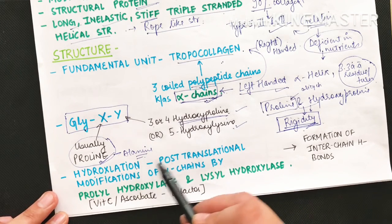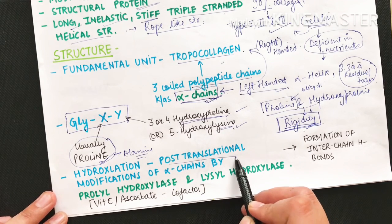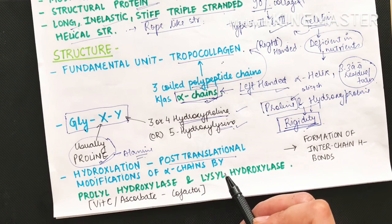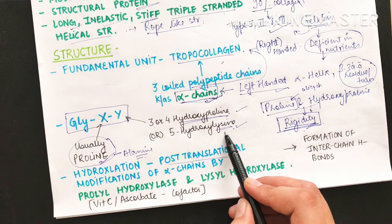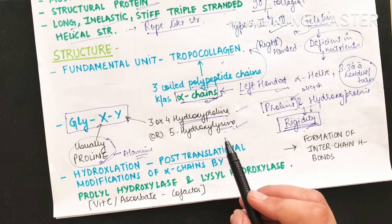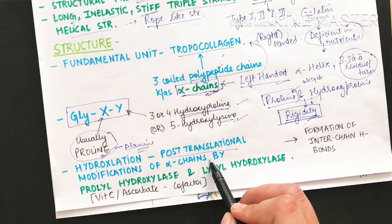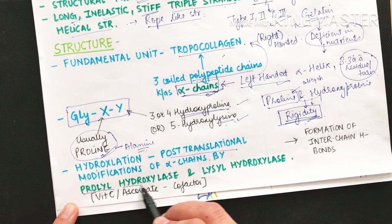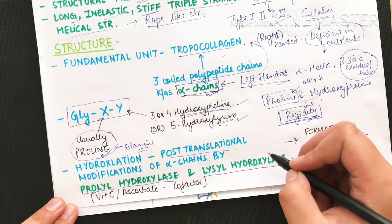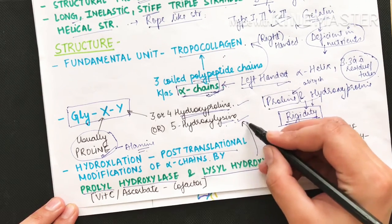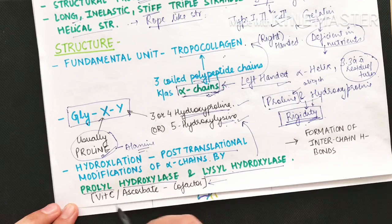Post-translational modifications occur after the polypeptide is formed: proline and lysine get an OH group added — they are hydroxylated. Two major enzymes are responsible: prolyl hydroxylase for hydroxyproline, and lysyl hydroxylase, which converts lysine to 5-hydroxylysine. These enzymes require vitamin C (ascorbate) as a very important cofactor.